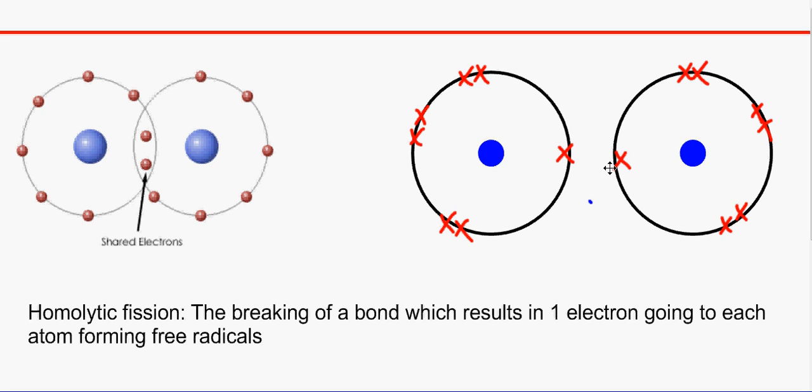If it was heterolytic fission, the electrons would be at only one atom. But homolytic fission, the electrons go to both atoms. They're equally shared between both atoms. Usually, with a covalent bond, it would just be one electron going to each atom. That would form two radicals because we've got this single, unpaired electron.